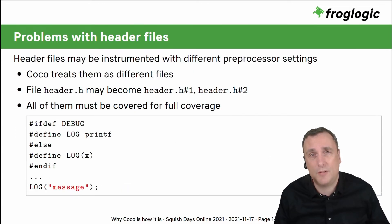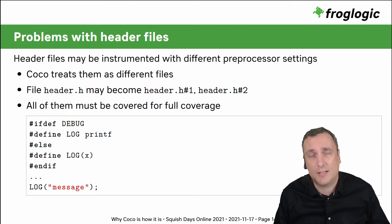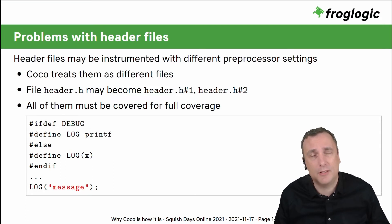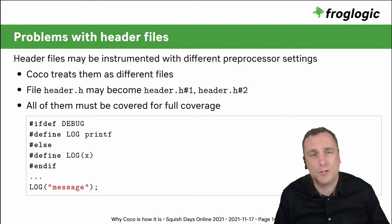This deduplication only works if the expansion happened the same way. Consider a log macro that expands to a printf statement for debug builds and to nothing for release builds. If that macro is used across your project with debug enabled for only part of it, the header files will be preprocessed in different ways and instrumented differently. Coverage Scanner therefore produces enumerated versions of such header files, and you will be required to achieve coverage for all those versions individually.